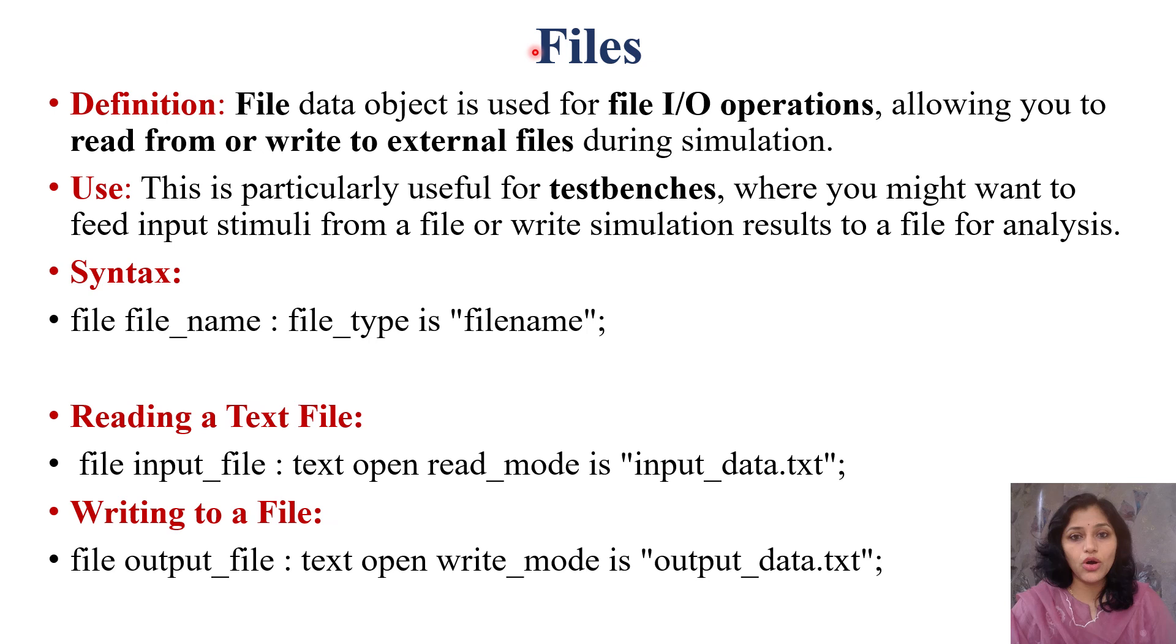Next data object is files. File data object is used for file IO operations. What happens in file data object? It allows you to read from or write to external files during simulation. If you are writing your code and you are simulating your code and during simulation, if you want to write a test bench, test bench is where we apply stimulus or values to our inputs.